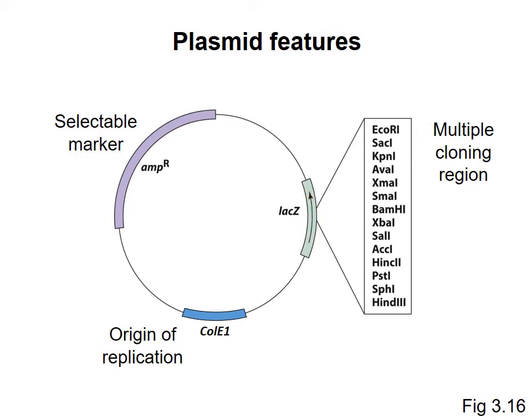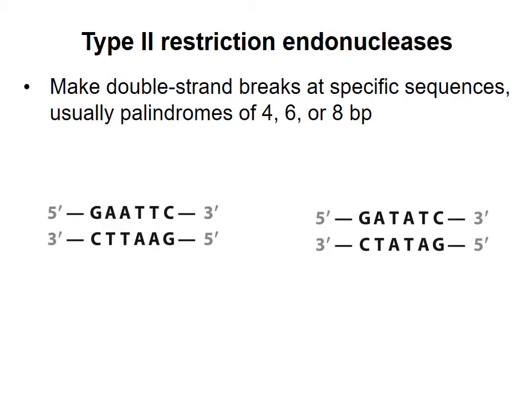I want to take a few moments now and describe restriction endonucleases in a bit more detail. Different types of restriction endonucleases exist. In this course, we'll focus on the ones most commonly used, which are type 2 restriction endonucleases. These enzymes recognize a specific sequence on the DNA, usually 4, 6, or 8 bases in length. The enzymes make a double-stranded break in the DNA at a site within the recognition sequence.